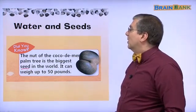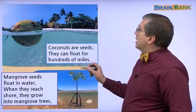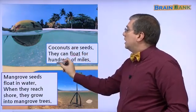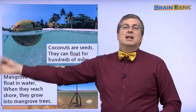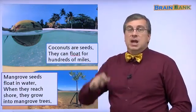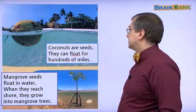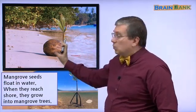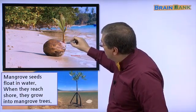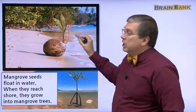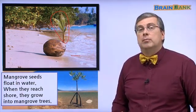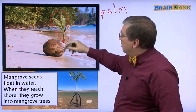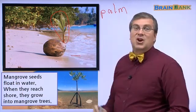Wow! Let's look some more. Coconuts are seeds. They can float for hundreds of miles — many, many kilometers. Here we can see a coconut floating for a long time. It reached the land, and now it's growing a new coconut palm tree. A new palm tree will grow right here from the coconut.